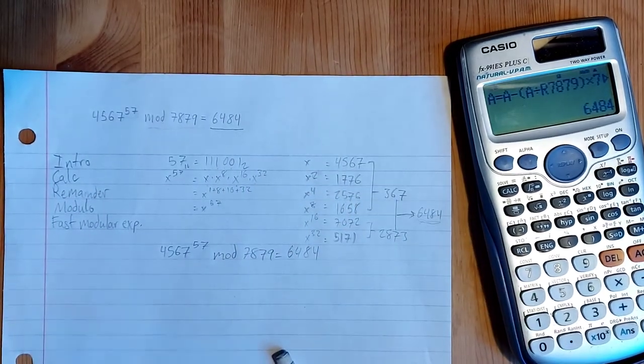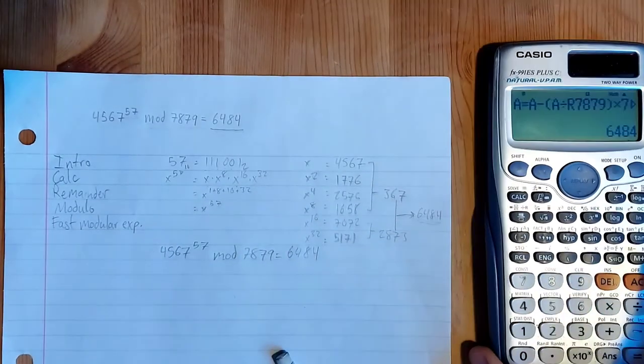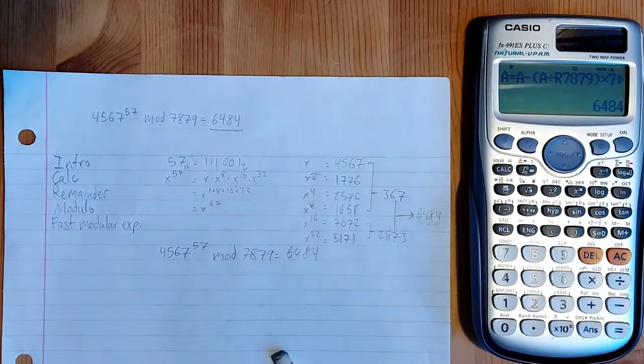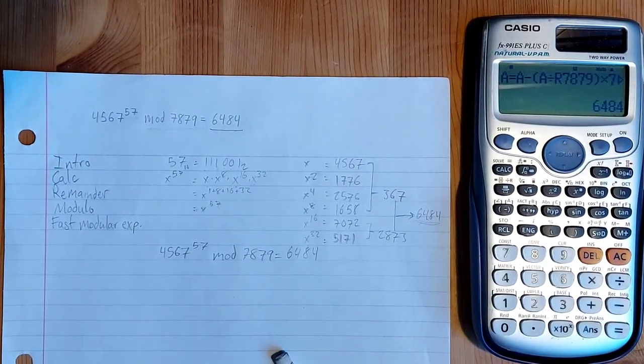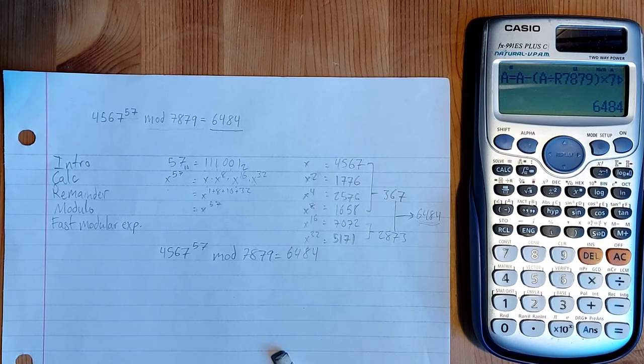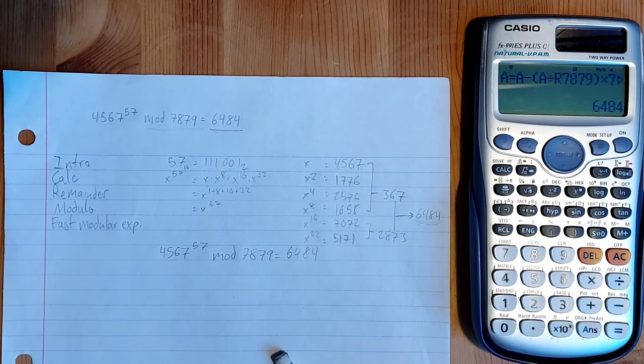So that's a quick overview of how to do fast modular exponentiation on the Casio FX-991. And I hope that helps. Thanks.